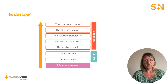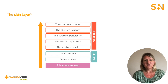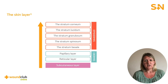The dermis lies beneath the epidermis and is firmly attached to it via the dermoepidermal junction. It is responsible for providing nutrients and physical support to the epidermis, and contains lymph vessels, nerve endings, hair follicles and glands. The dermis is composed of two layers: the reticular and papillary layers. The papillary layer contains the nerves and capillaries that feed the epidermis. The reticular layer is made up of collagen and elastic fibres, arranged in a woven network giving tensile strength and providing the ability to stretch and contract.